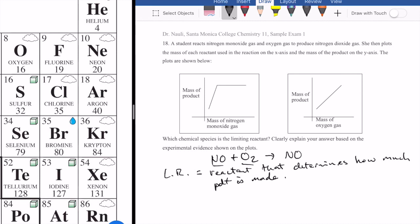So let's take a look at these two plots to see which reactant matches that definition. If you look at the nitrogen monoxide gas right here, at the beginning, you see that as you increase nitrogen monoxide, it also goes up. So that's kind of matching what we expect of a limiting reactant.